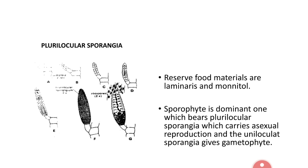The Ectocarpus sporophyte stage or dominant stage reproduces by asexual method, producing spore-like structures. Ectocarpus sporophyte plants develop two types of sporangia: plurilocular sporangia and unilocular sporangia, both developed on the lateral branches. Plurilocular sporangia are ovate-shaped, slightly elongated structures with many locules — that is why they are called plurilocular sporangia. Each locule shows a single nucleus and cytoplasm. At maturity, these contract and form a pear-shaped structure called a zoospore.